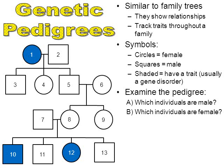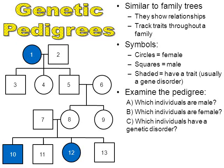Which individuals in this family have a genetic disorder? Persons 1, 10, and 12 have a genetic disorder — those three people are shaded in. Now let's get started with our first example.